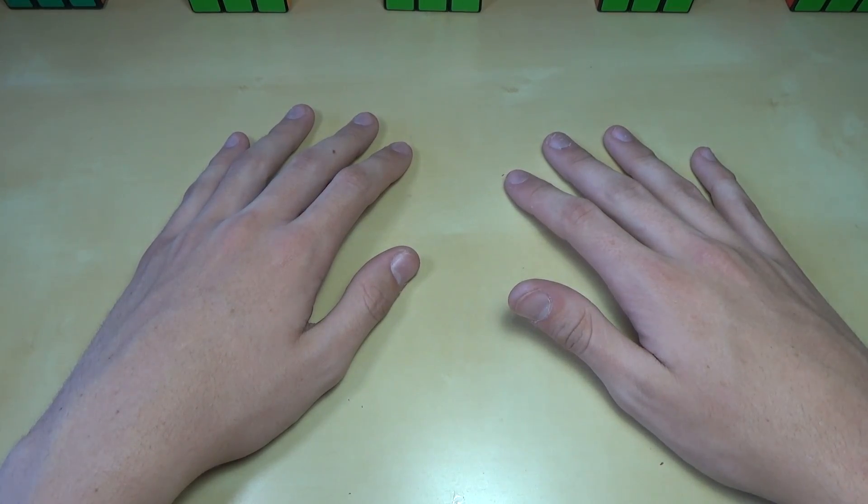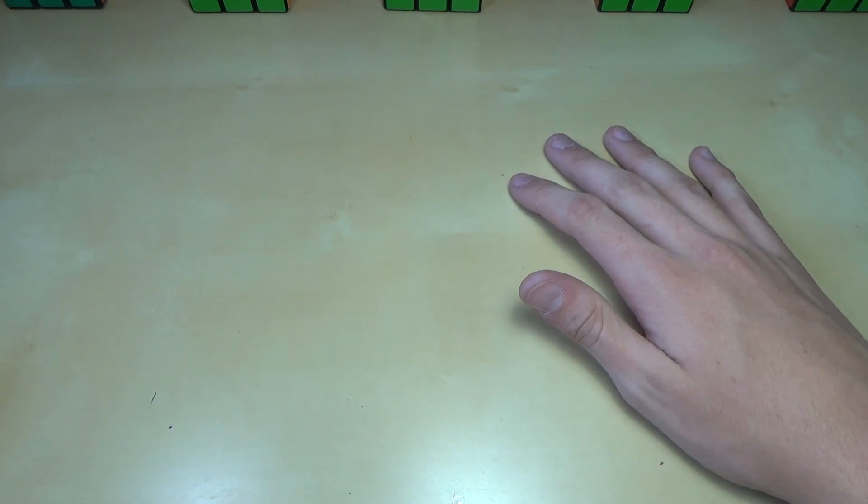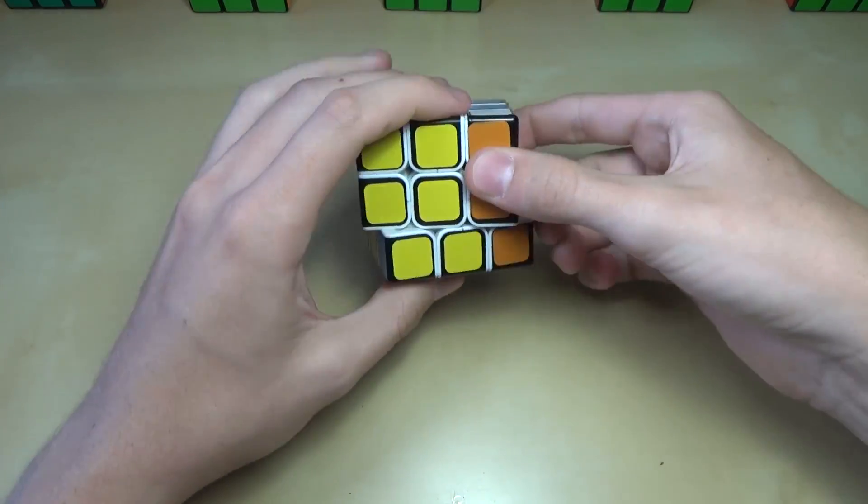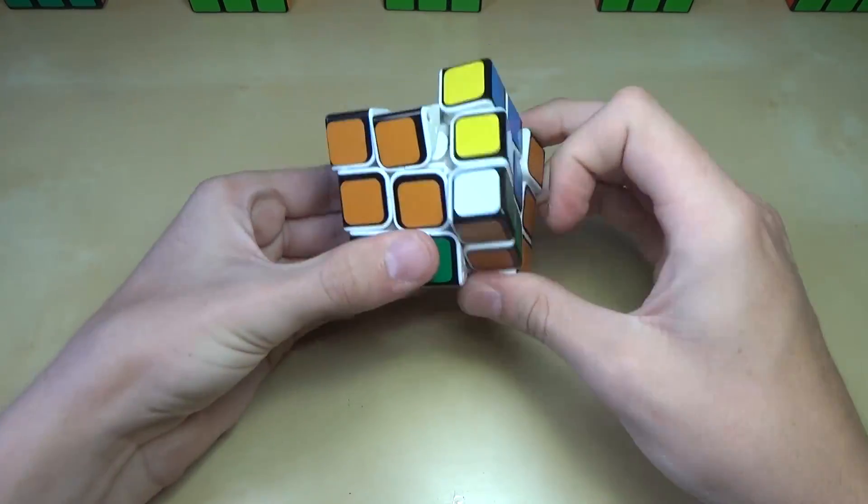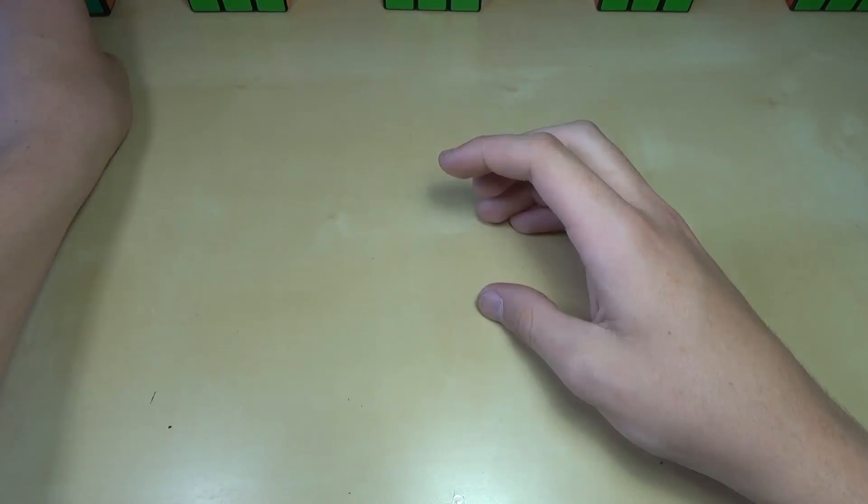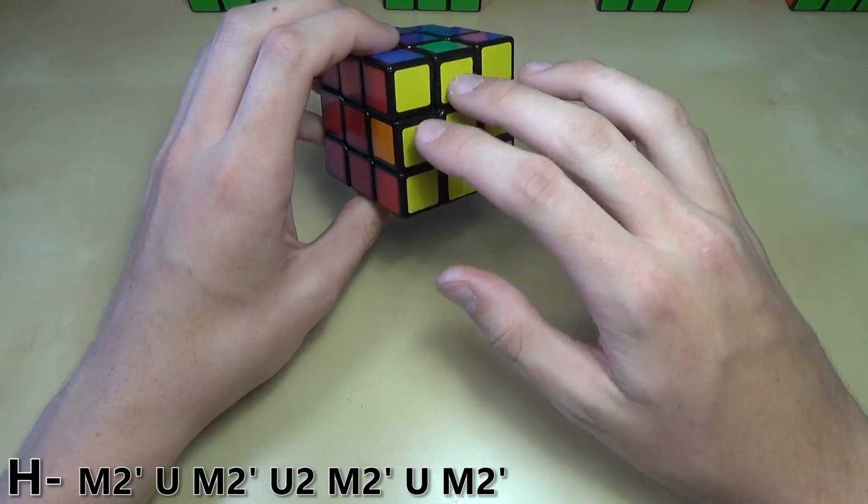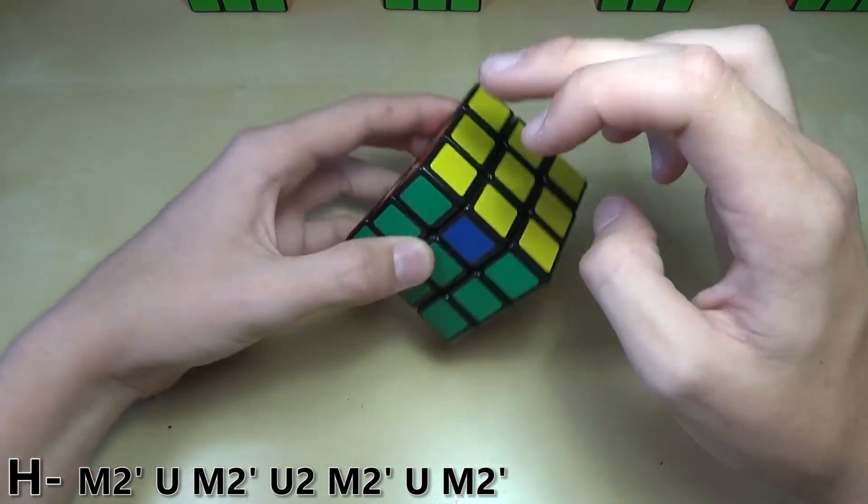For the first one, I had a little bit of trouble deciding. I almost debated making it the G perm, just because it's so fun to execute the GA perm like that. I'm pretty slow at it, but it is pretty fun. What I chose instead is just the simple H perm.